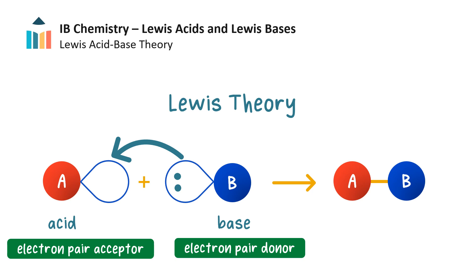Lewis acids can accept the electron pair because they possess a vacant orbital. Lewis acids and bases can be inorganic or organic compounds. There is usually only one product in a Lewis acid-base reaction, except in some organic reactions. This product is called an adduct.